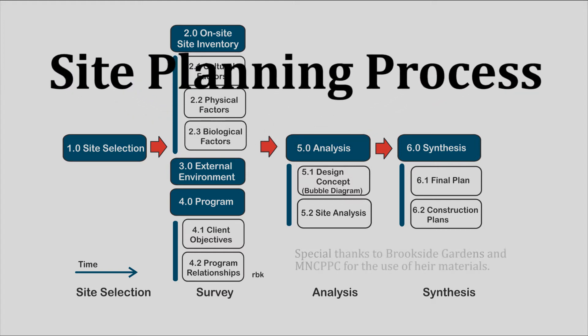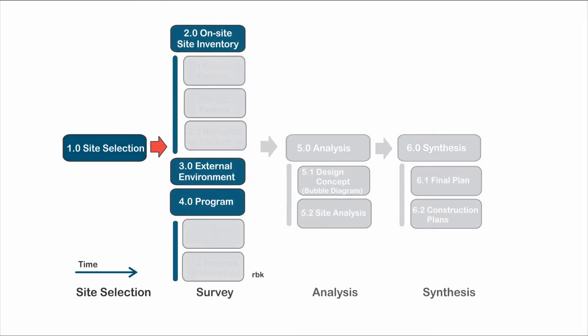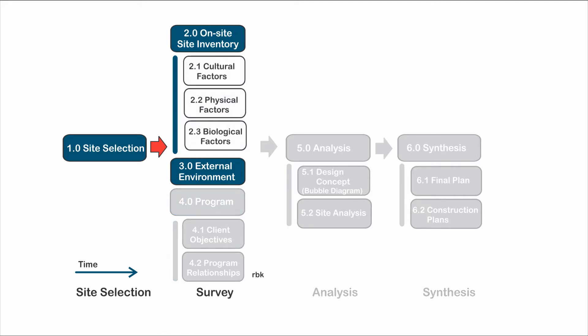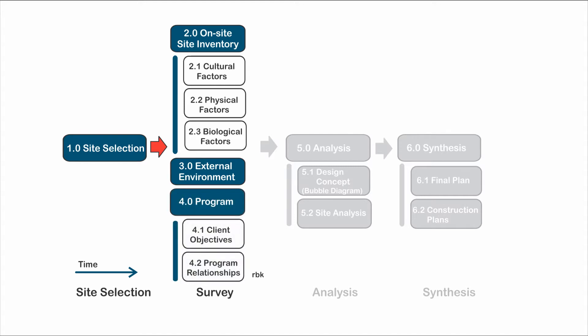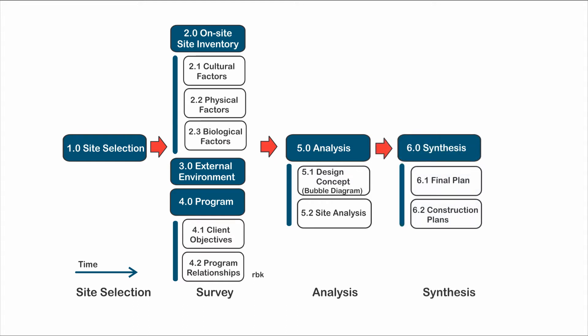Conceptually, the site planning process is fairly straightforward. The site to be developed is identified. Resource constraints and opportunities are also identified. Users and stakeholders are surveyed. And programs and activities to be delivered are identified. All of these factors are analyzed to develop a plan that delivers the desired program and activities for users.